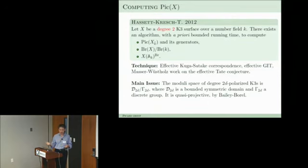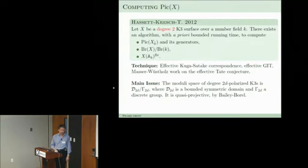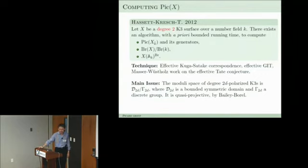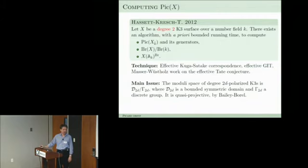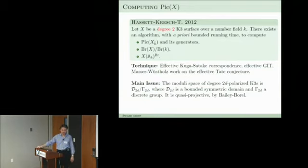For quartic K3s there is also a GIT construction of the moduli space, but it's not quite the same space — there is a small discrepancy. What is needed is to overcome this discrepancy and get an effective construction of the quotient. I believe this is true in general: it comes down to effective generation for the ring of automorphic functions, with effective bounds on degrees of generators. This is accessible in principle via analysis, but all the proofs use compactness and continuity arguments that don't give explicit bounds — so that was a fun project.